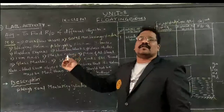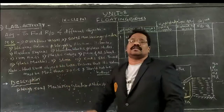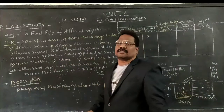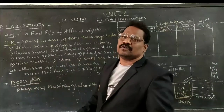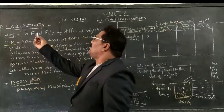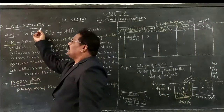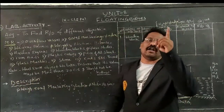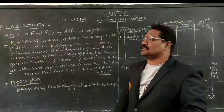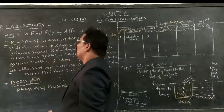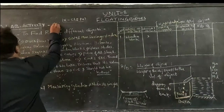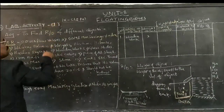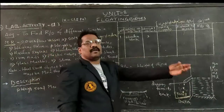This is our fourth session. Within this session we are going to discuss Lab Activity One. We are going to discuss what this lab activity covers — it gives information about finding the relative density of different objects.